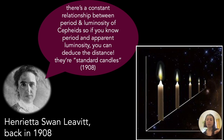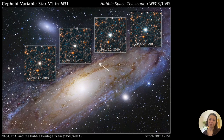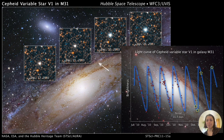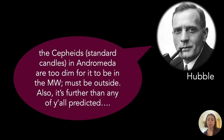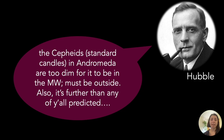Henrietta Swan Leavitt found these standard candles and plotted this relationship. By tracking a Cepheid's luminosity and period, we can deduce how far Andromeda is from the Milky Way. Hubble says the Cepheids in Andromeda are too dim for it to be inside the Milky Way — too dim to be within the radius of our galaxy — so it has to be outside. Hubble also finds that even Curtis's estimate for how far away Andromeda was is too small; it's much further away than anyone in the debate had predicted.